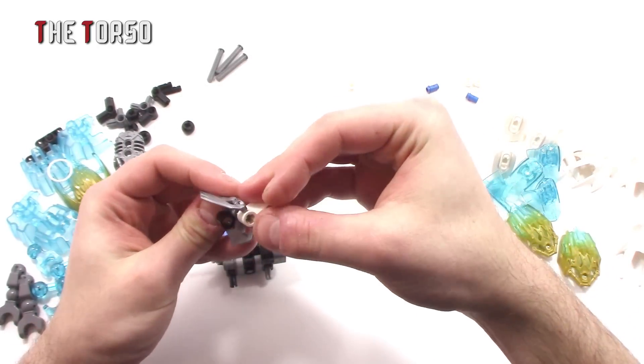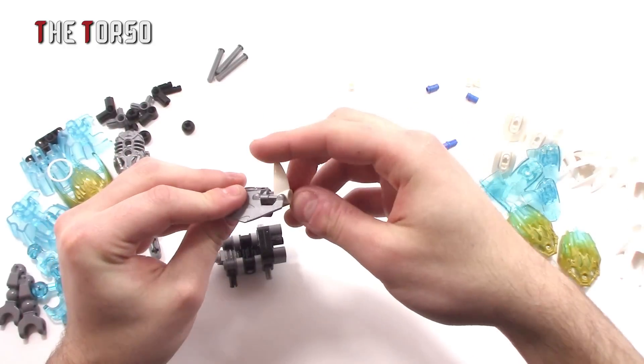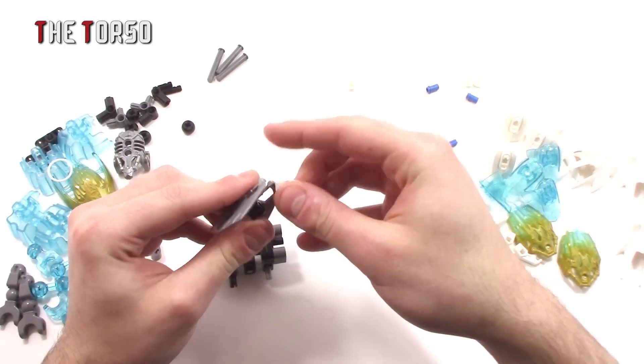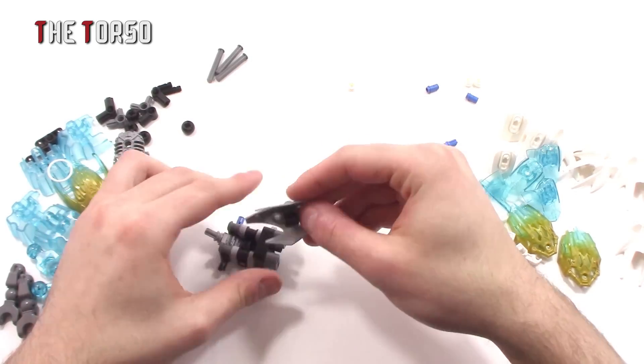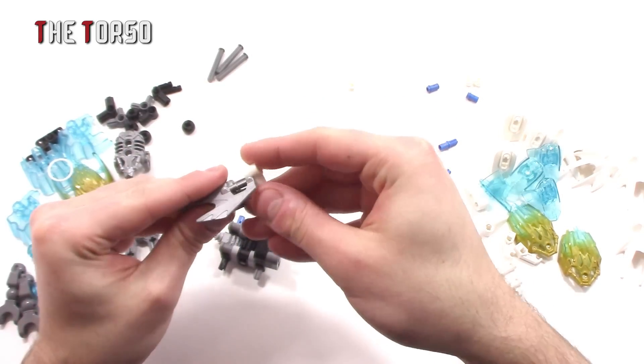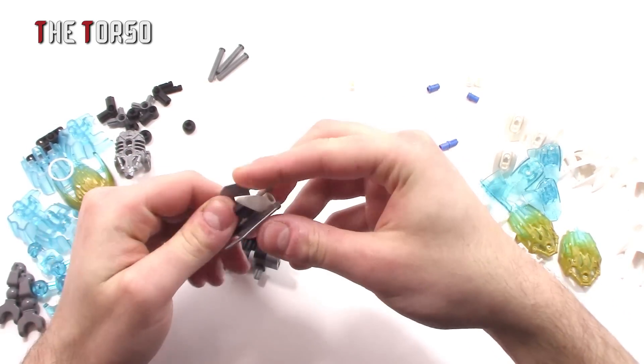So next we're going to build the top part here. And it's very simple. It just comes in three pieces. You got one of these, which is going to go in this peg right here. This will connect it to the top. And what is a deer without a bushy tail?